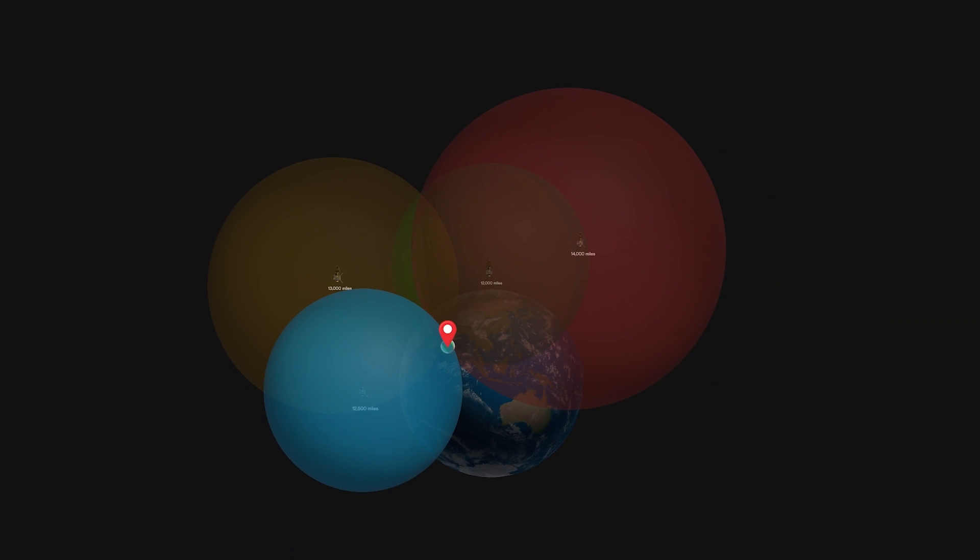So to locate anything precisely on Earth, we require distances from four different satellites, which gives four spheres intersecting at a single point.